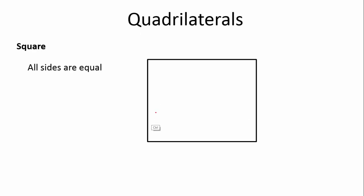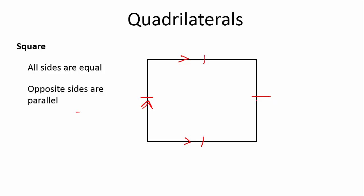Square: all the sides are equal. To show equal sides, we put a line mark on each side. The opposite sides are parallel — to show a line is parallel, you write an arrow. That shows that one side is parallel to the opposite side. And all the angles are at 90 degrees, so there'll be a square in each corner to show it's a 90-degree angle. That is your fully defined square.